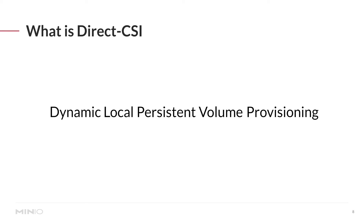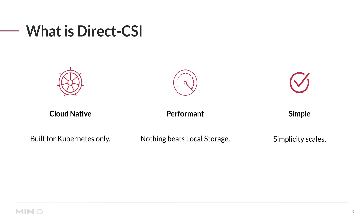You can think of Direct CSI as a dynamic local persistent volume provisioner. As you add more nodes to your Kubernetes cluster, you just attach local storage and let Direct CSI take over. Some things that make Direct CSI great: it's cloud native, built only for Kubernetes; it's performant, because nothing beats local storage for high-performance applications; and it's simple — and the beauty of simplicity is that it scales. Those are the three core features Direct CSI brings to the table.